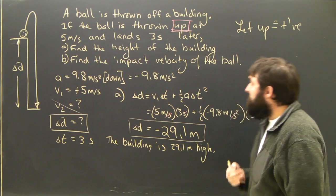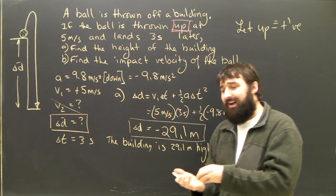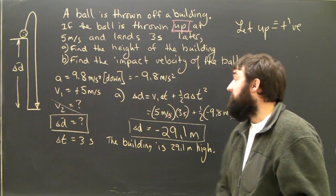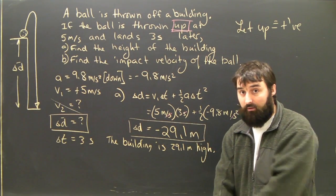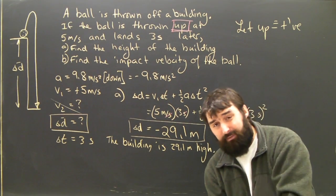Part B says, what is the impact velocity of the ball? What is the speed the ball has when it hits the pavement, not a second later? So, the impact velocity will definitely not be zero, because it will be zero after it hits the ground and has stopped, just as it's about to hit the ground.